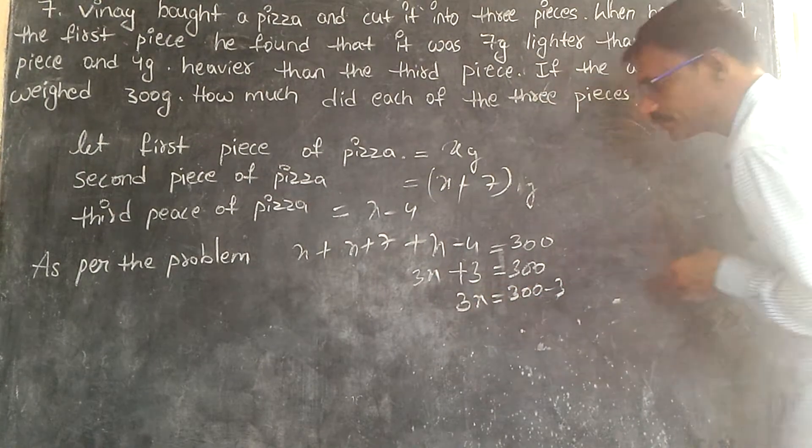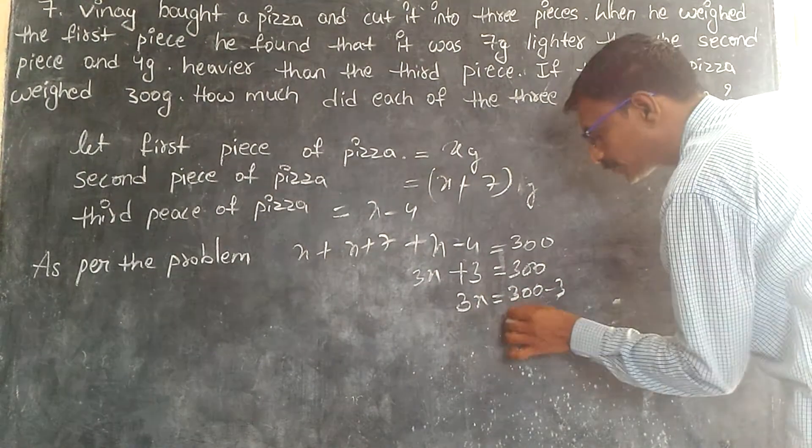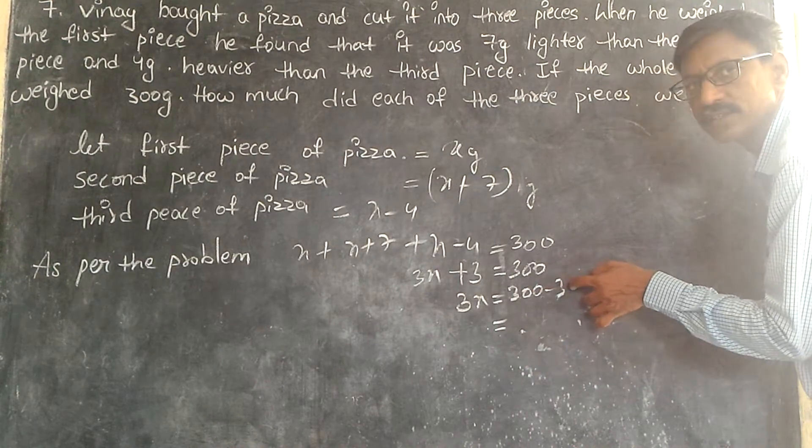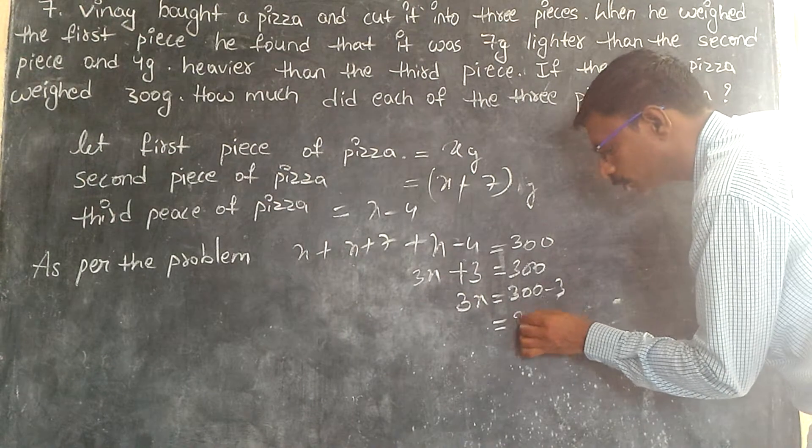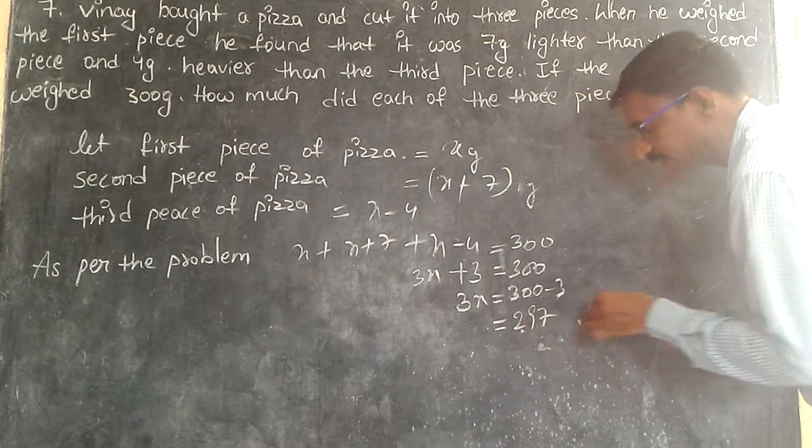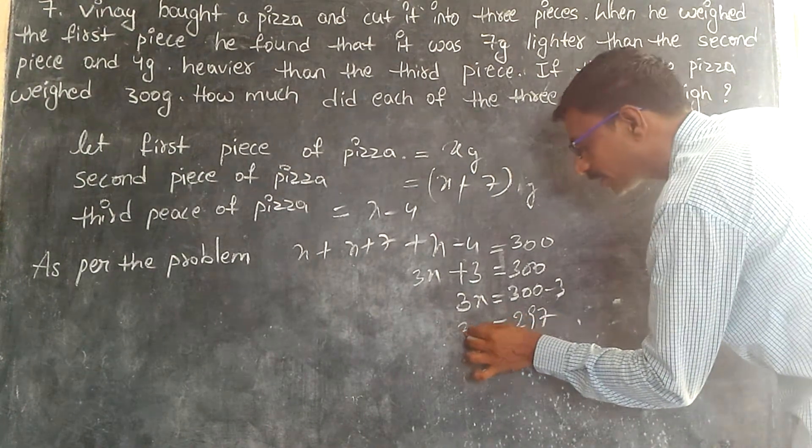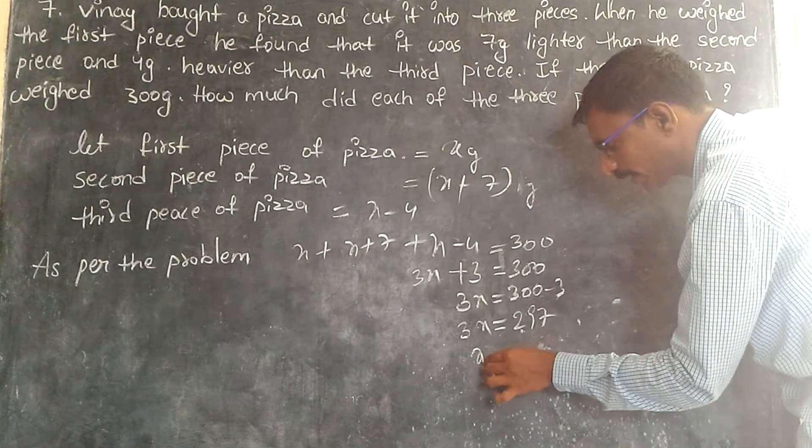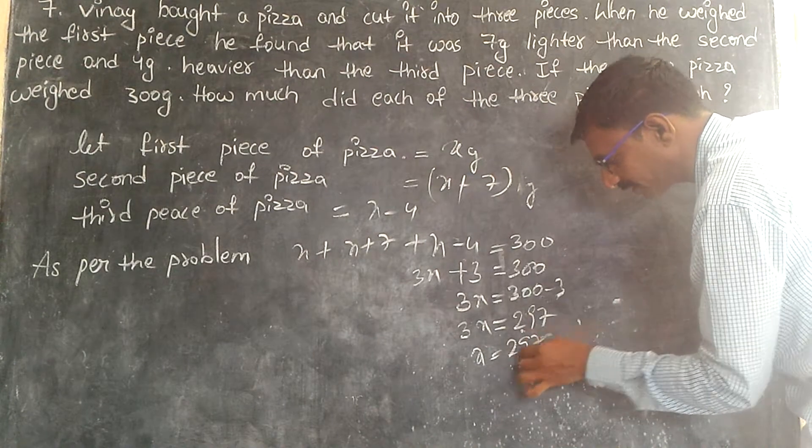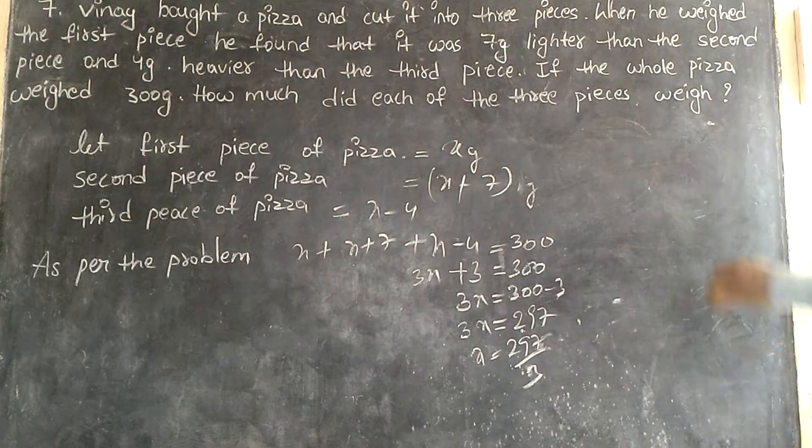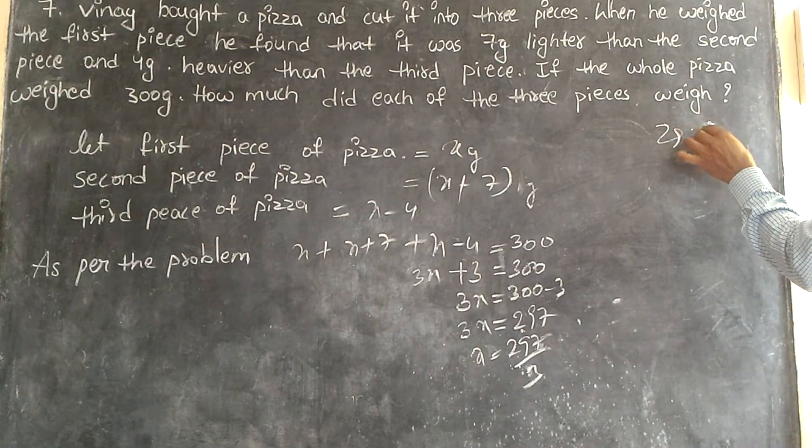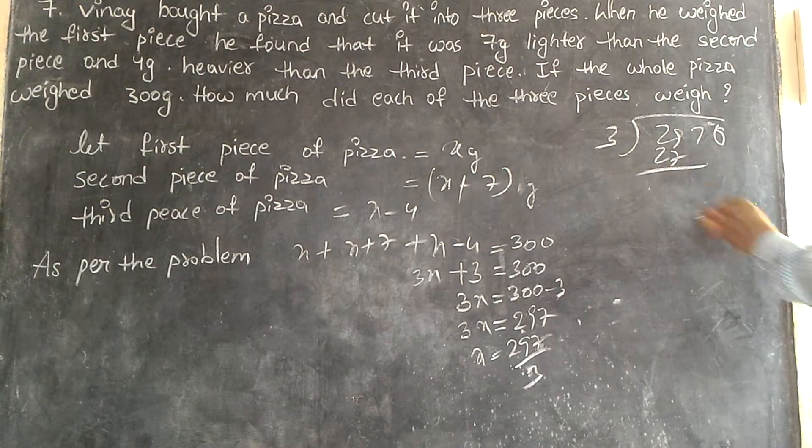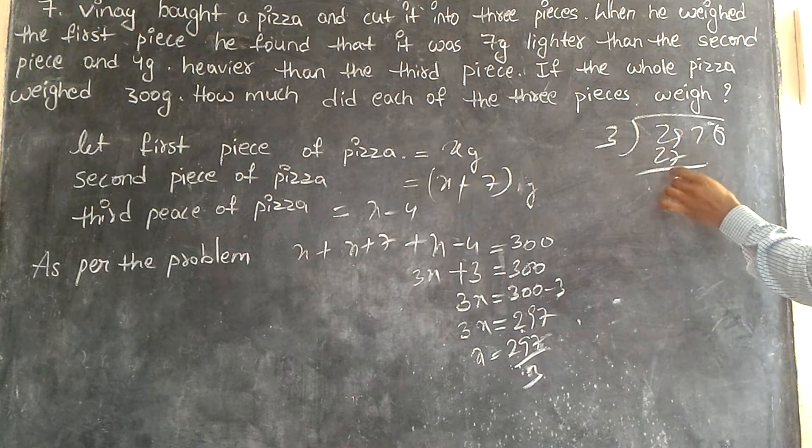Here we have 3X. So keep equal to here, 300 minus 3 is 297. Here, how much will come? 3X. 3 is multiplied, we will go this side. So X is equal to 297 by 3. So 297 divide it to 3.